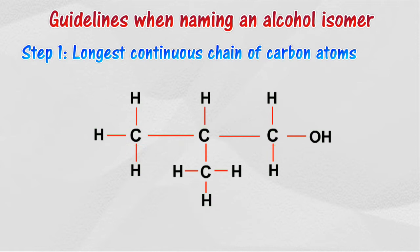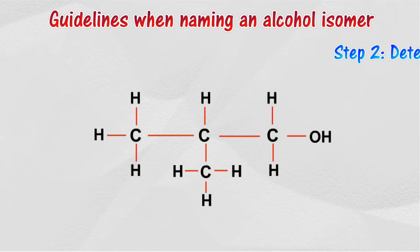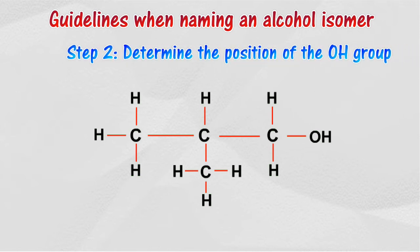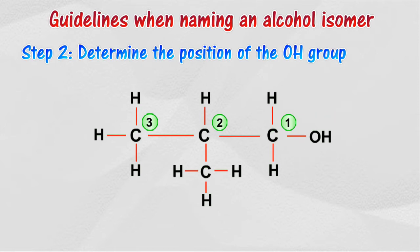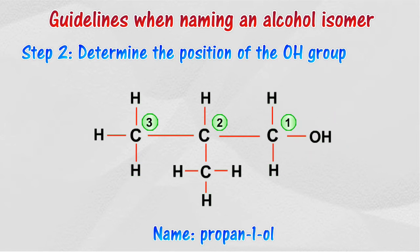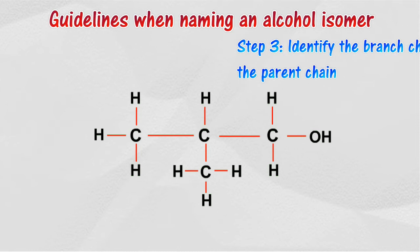Step 1: Select the longest continuous chain of carbon atoms in the molecule. Thus the name of the alcohol is propanol. Step 2: Determine the position of the OH group. Use the smallest number to indicate the position of the functional group. In this case, the OH group is at the first carbon, so the name of the alcohol is propan-1-ol.